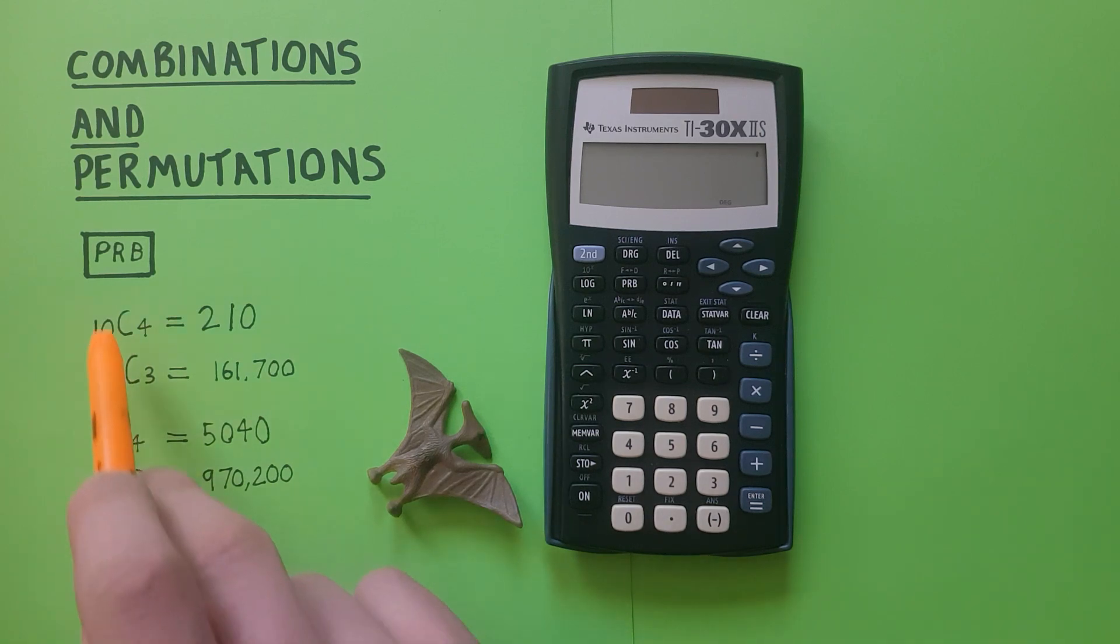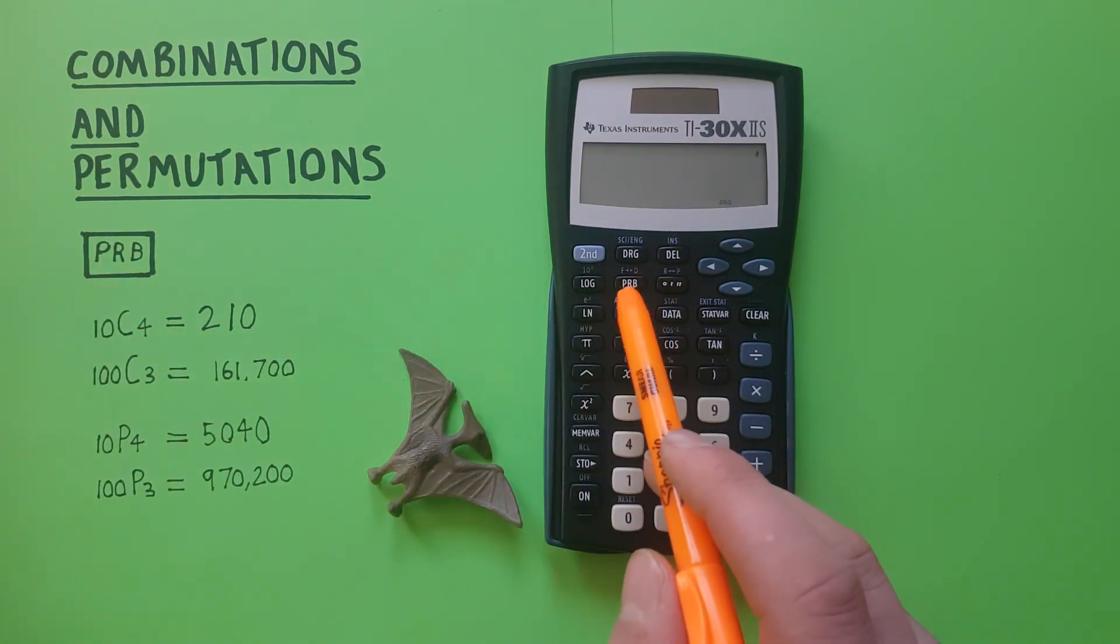To do this we'll be needing to use the PRB key or the probability key. It looks like this and is located just to here.